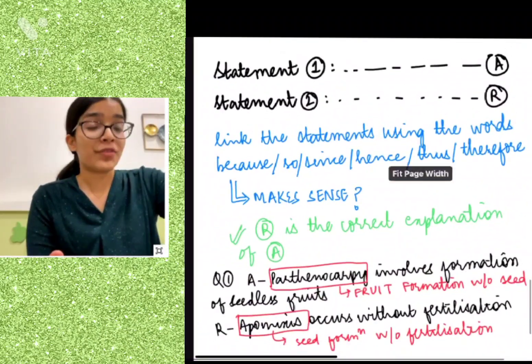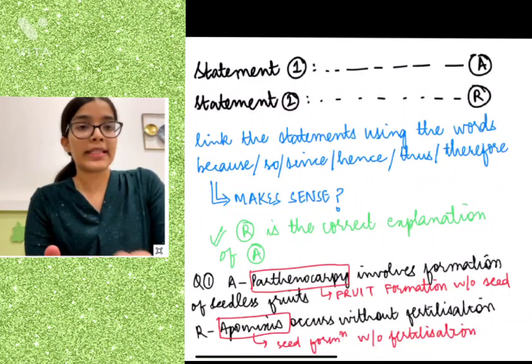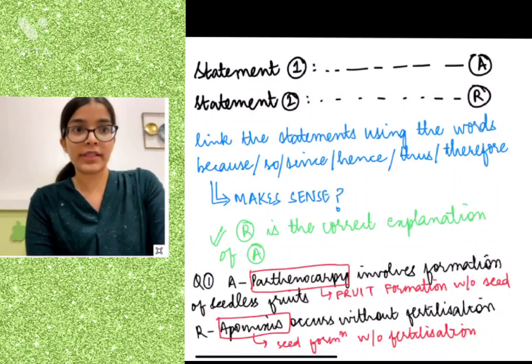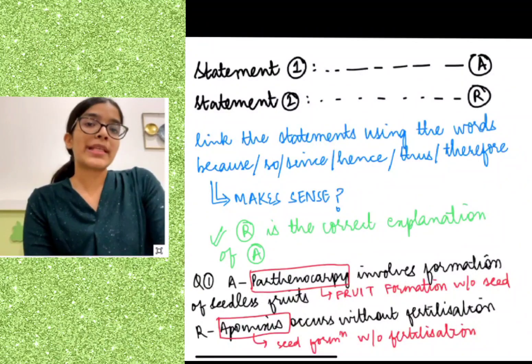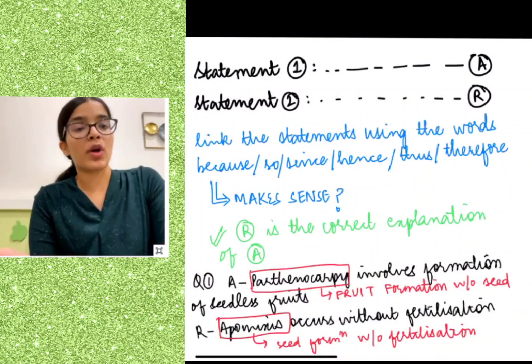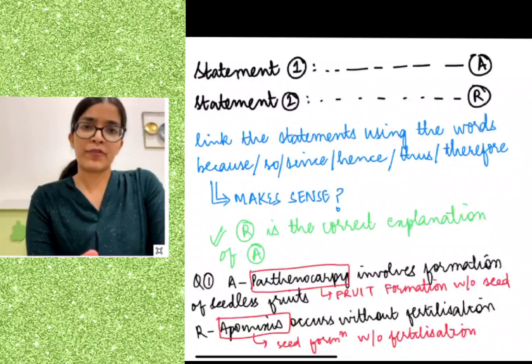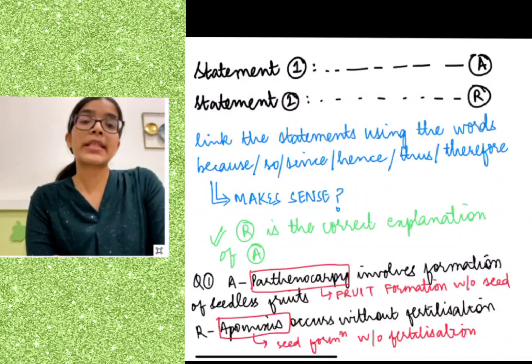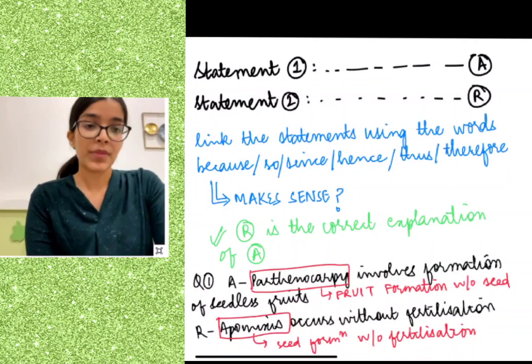Now, why you have to read every line of NCERT and highlight these keywords - there is another logical way of solving these problems. You should try to link statements 1 and 2 using the keywords we just discussed - that is because, so, hence, thus, therefore. If it does make sense, then the reason is most probably the correct explanation of the assertion.